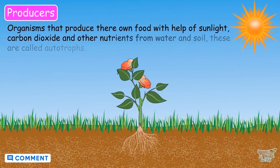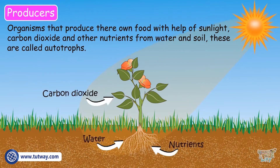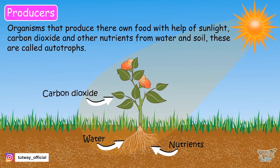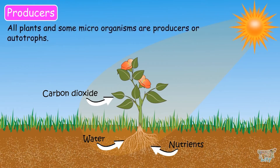Organisms that produce their own food with the help of sunlight, carbon dioxide, and other nutrients from water and soil. These are also called autotrophs. All plants and some microorganisms are producers or autotrophs.